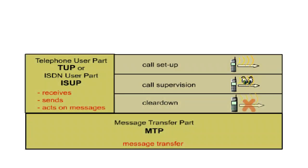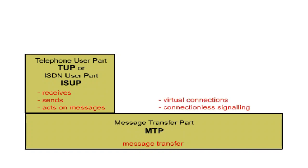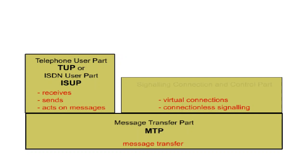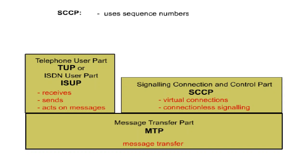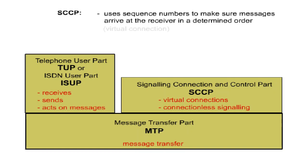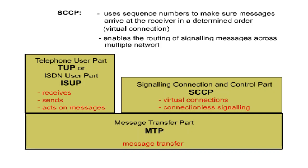To guarantee virtual connections and connectionless signalling — that is, signalling which is not bound to a call — another protocol layer on top of MTP is required, parallel to TUP. This is the Signalling Connection and Control Part, SCCP. TUP and SCCP take over different tasks, but both make use of the services provided by MTP. In contrast to MTP, SCCP uses sequence numbers to make sure that messages arrive at the receiver in a determined order, so a virtual connection can be guaranteed. SCCP also enables the routing of signalling messages across multiple networks in the absence of a call.